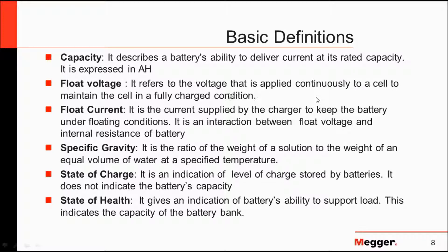As we go through this presentation, we'll be using some of the following definitions. Capacity describes the ability to deliver constant current at a rated rate, expressed in amp hours. Float voltage refers to the voltage applied continuously to a cell to maintain it in a fully charged condition. Float current is the current supplied by the charger to keep the batteries in a float condition, and is an interaction of the float voltage and internal resistance of the battery.